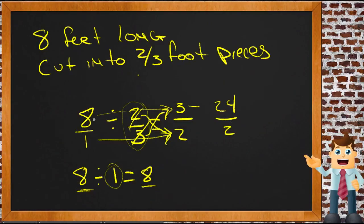So 8/1 divided by 2/3 is the same as 24/2, which reduces to 12. So that number is bigger than the number we started with, which is what we expected. And it looks like, since our pieces were only 2/3 each, every time we cut a board we had a third of a foot left over, right?